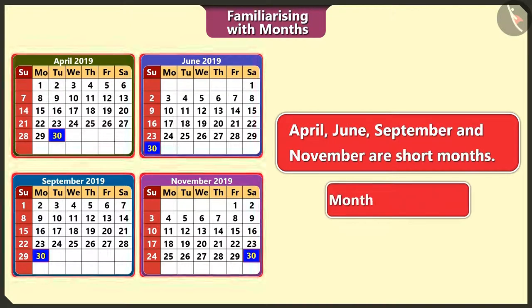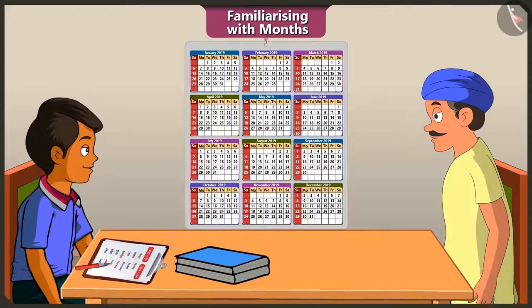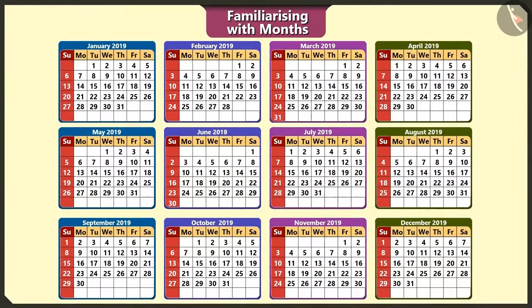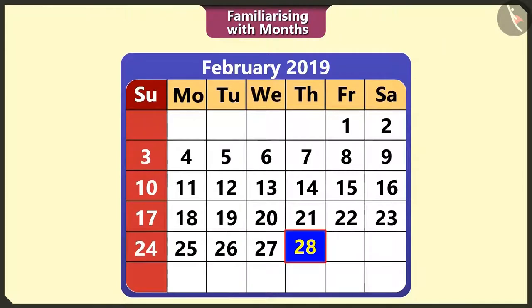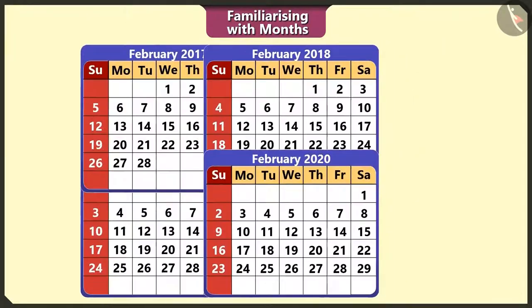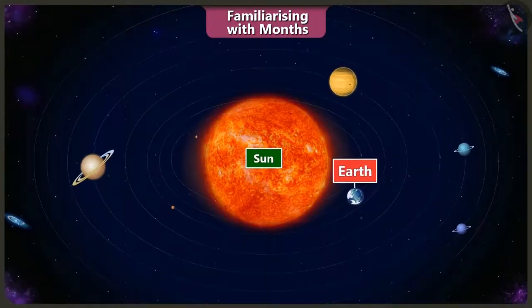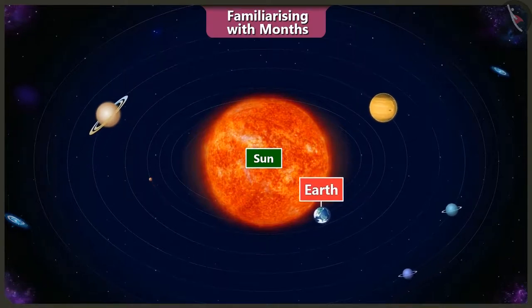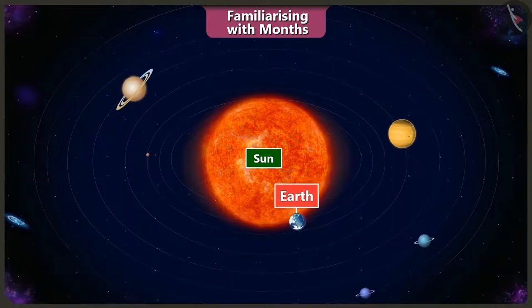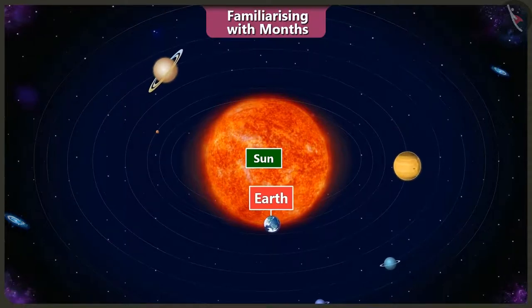Hey, you did not tell how many days are there in the month of February! February is the shortest month. Normally there are 28 days in February, but once in every four years there are 29 days in February, because it takes 365 days and six hours for the Earth to complete one revolution around the sun.